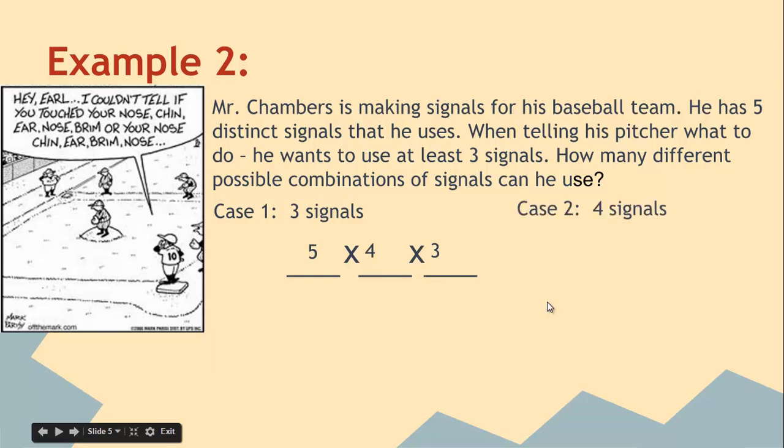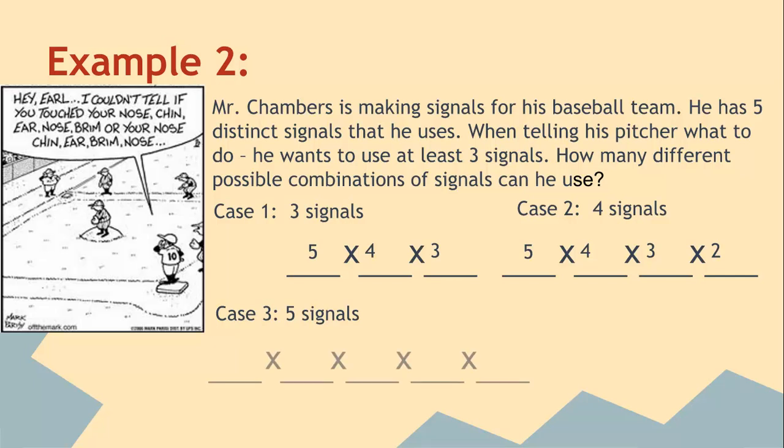Case two is where we use four signals, so it's five times four times three times two. And case three is where we use five signals, five times four times three times two times one. Five ways for the first all the way down to one for the last one. So you get three numbers, 60 plus 120 plus 120, and that gives you 300 different combinations.